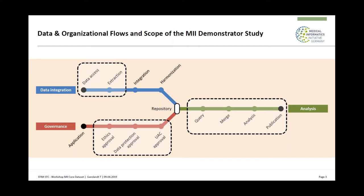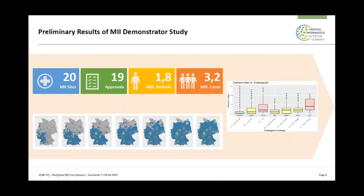Requests went to the different sites for query, merge, analysis, and publication. With 20 different sites there were 19 approvals — one was still missing — 1.8 million patients and 3.2 million cases. You see the coverage coming along: first it started in the southwest, then the south filled up and then came very nice coverage. One interesting spot is Göttingen — you always see it as a grey zone because there was a change in zip codes. We first thought it was a mistake; just by visualizing the data we figured out it couldn't have been otherwise. This is an example about comorbidity.